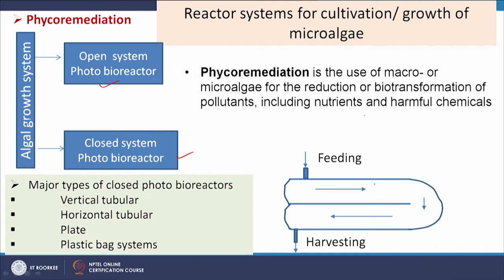This is the flow sheet of the open system photobioreactor. Wastewater enters an open pond where microalgae grow and take up pollutants. After sufficient residence time, microalgae are harvested from the effluent. The microalgae concentration is maintained, and we simultaneously obtain treated water and harvested algal biomass — two benefits from one process.